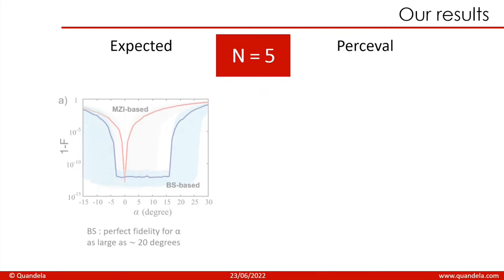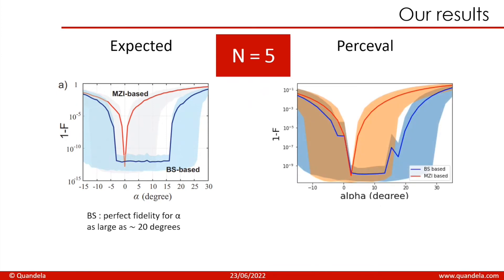Let's see the results that we obtained. In the article, they did their calculations on matrices of size 5 and they obtained this graph, and we did the calculations on Perceval and we obtained this graph. For the MZI based interferometers, we can see that they are equally sensitive to both positive and negative values of alpha and the interferometers are not stable at all. But for the BS based interferometers, the infidelity behaves radically different because we can see that when alpha is negative, the performance are comparable. But when alpha is positive, the BS based interferometers provide perfect fidelity for alpha as large as almost 20 degrees, which is several times larger than for the MZI based interferometers. So the BS based circuit is way more stable than the MZI based circuit.